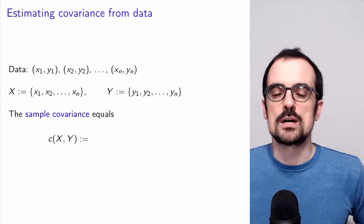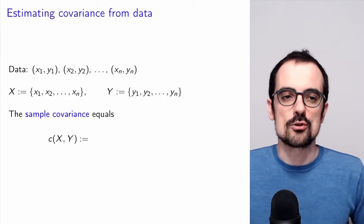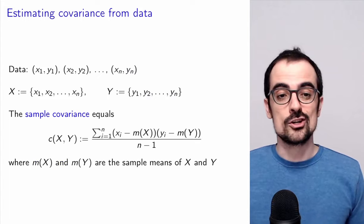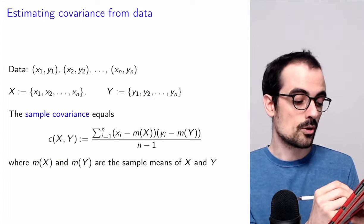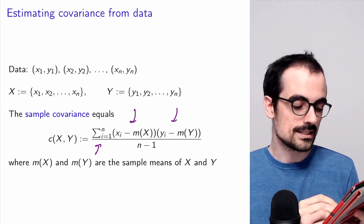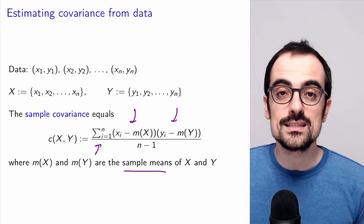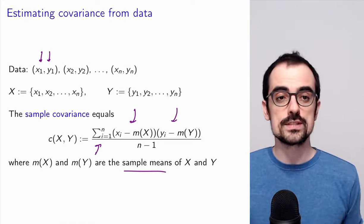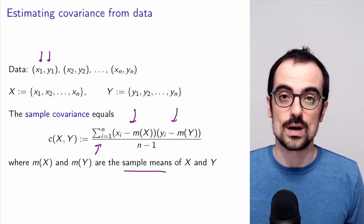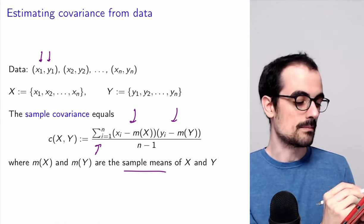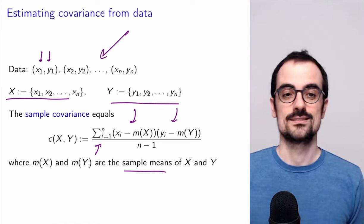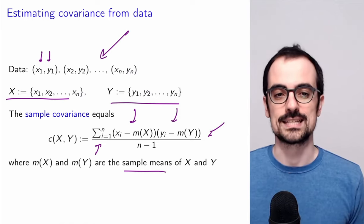Up to now we've only talked about random variables. What if we have data and want to compute correlations? We approximate the sample covariance using averages: we compute the sample mean of the product of the centered quantities, centering using the sample means of each variable. Note that we need data where we have joint examples of both quantities — we need to see instances of both simultaneously. We compute the sample mean of each, use that to center the data, compute the product, and average over that to get the sample covariance.